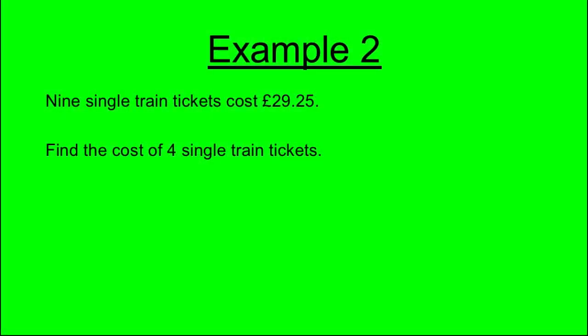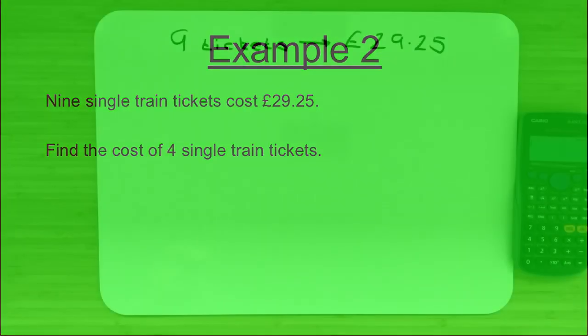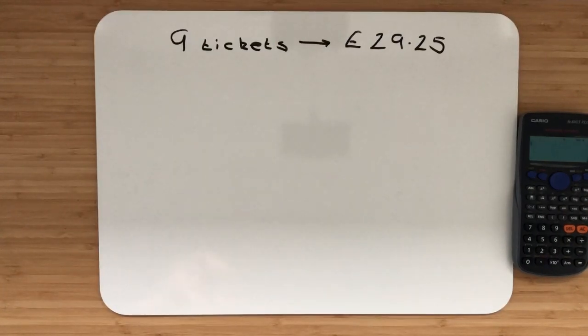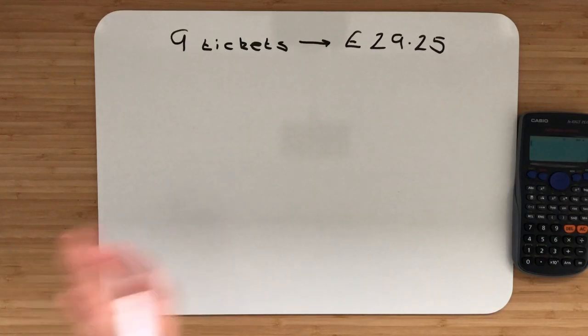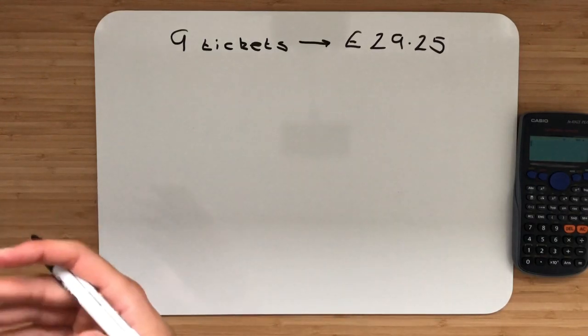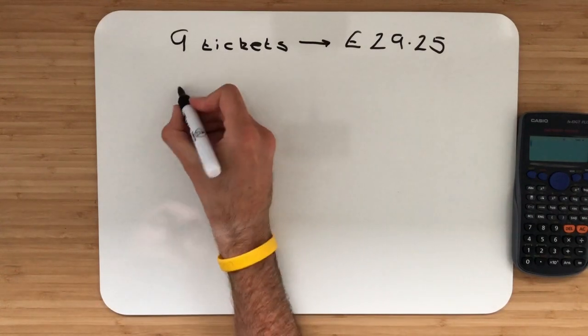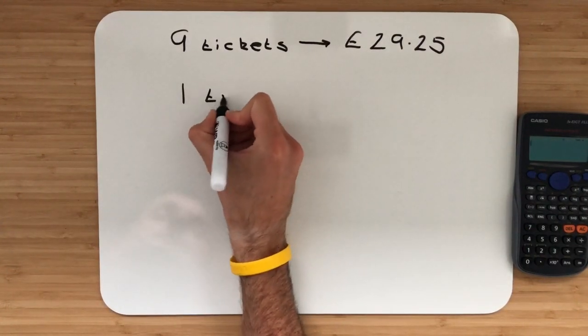Example two. Nine single train tickets cost £29.25. Find the cost of four single train tickets. In our second example we've been given the cost of nine train tickets at £29.25 and we want the cost of four. So this is in direct proportion as one thing increases the other thing will increase. So let's just find out the value of one ticket to begin with.